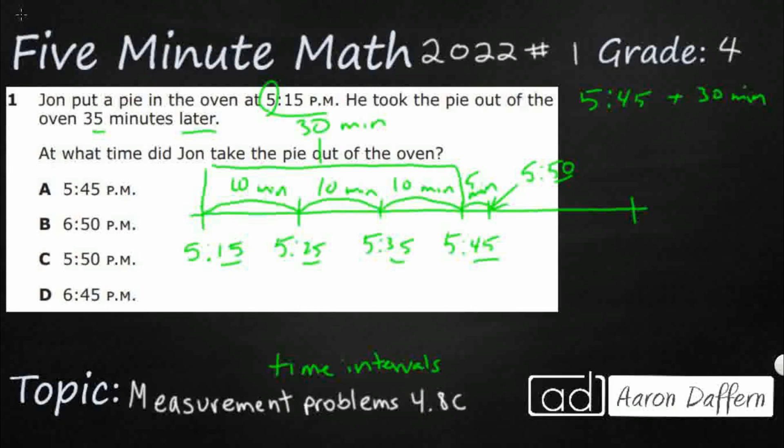So another way we could have solved this is we could have just drawn a clock. But once again, it really only works if you don't have to go over the hour. Once you go over the hour, we kind of lose track of stuff. And we'll notice another problem with this. So if you solved it like this, that's fine. You just have to kind of keep a few things in your head. One of them being, are you going over the hour? Because then your hour shifts.